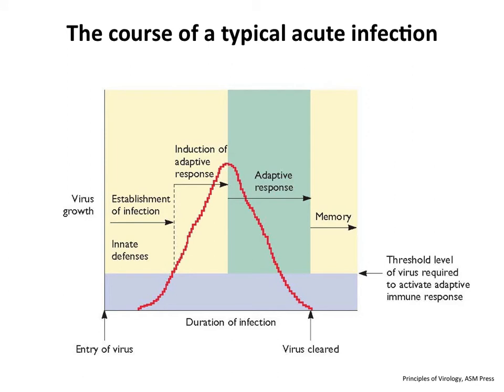Here's the time course of a typical acute infection. We're looking at virus growth in the red line over time. You're infected, and remember, as soon as the virus comes in — within hours — your innate defenses are kicking in. They may or may not clear the infection, but if they cannot, the virus keeps replicating. Then there's communication between the innate and adaptive systems; you begin to make an adaptive response shown here in blue — antibodies and T cells. The virus is eventually cleared, and typically the antibody response happens past the peak of virus replication. When you've recovered, you have what we call immune memory.